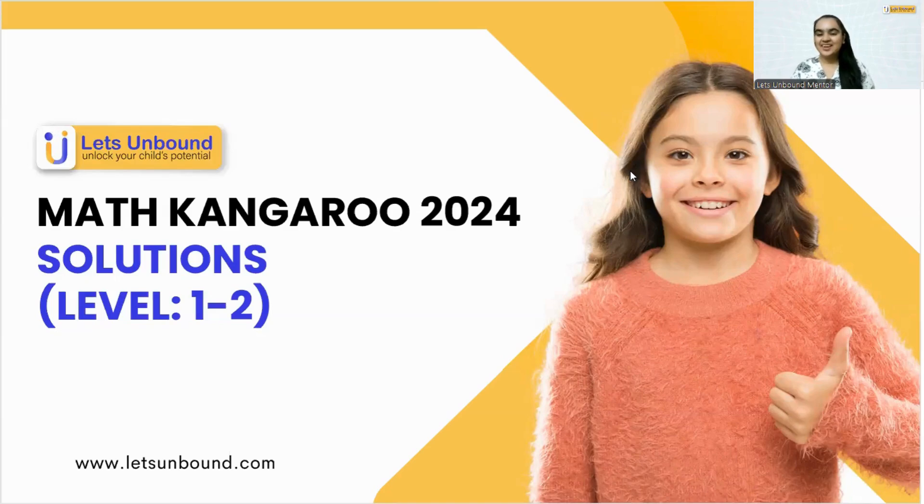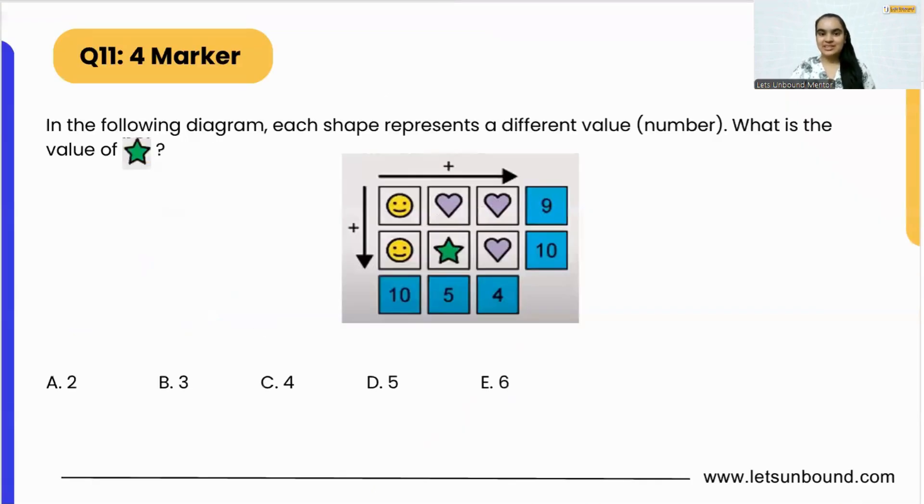Hello everyone, today we are going to discuss another question that came as a four marker in Math Kangaroo 2024 paper. Now let's get started with our today's question. It's a very interesting question. In the following diagram, each shape represents a different value—value means a number basically. What is the value of this star?